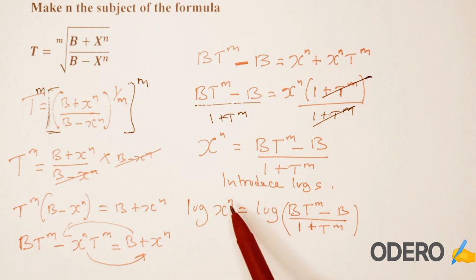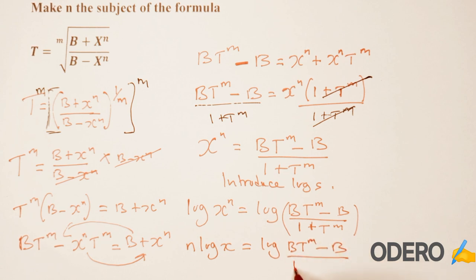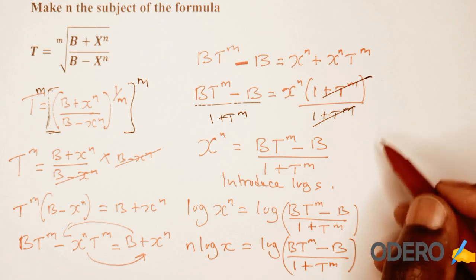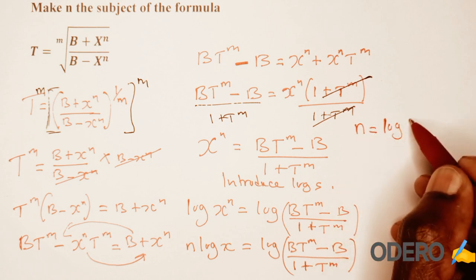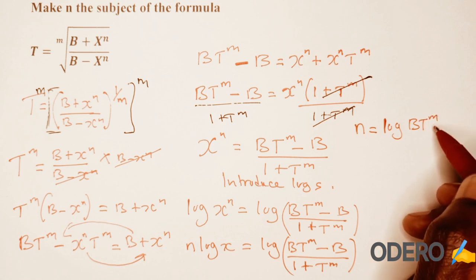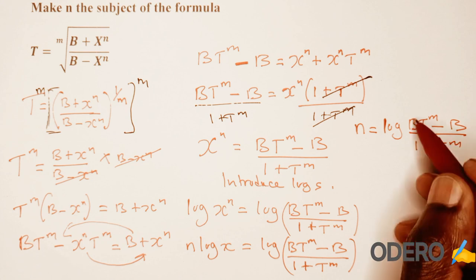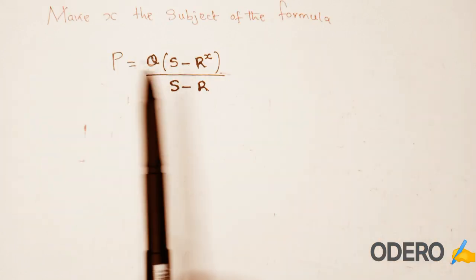According to laws of logarithm, this n can come in front of log, so we have n log x is equal to log of b t raised to m minus b over 1 plus t raised to m. So to find n finally, we just divide both sides by log x. Therefore n is equal to log of b t raised to m minus b over 1 plus t raised to m, all divided by log x.